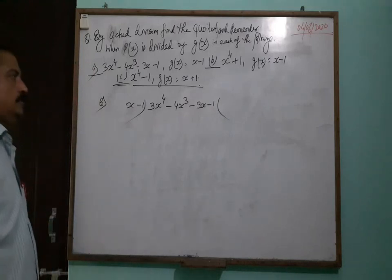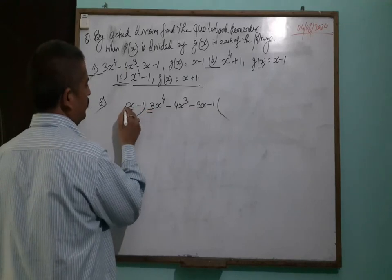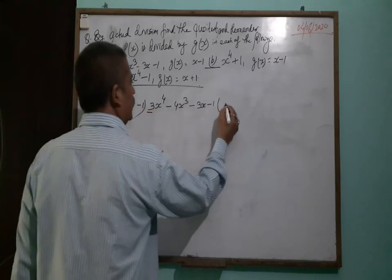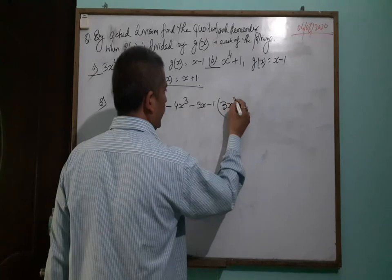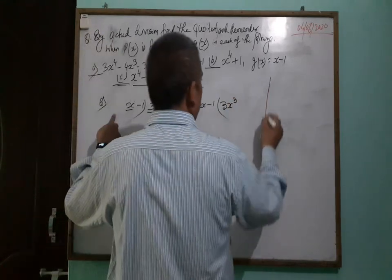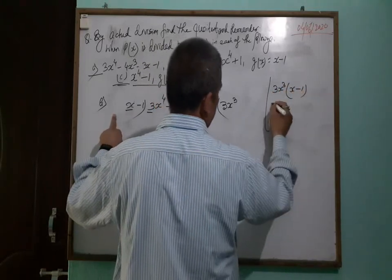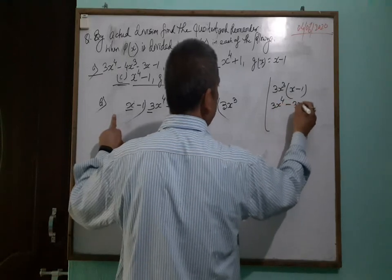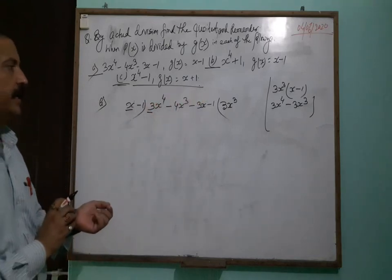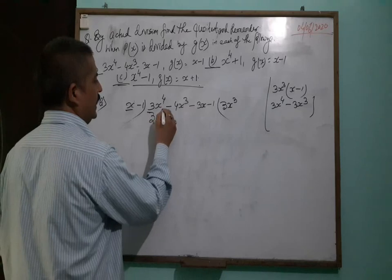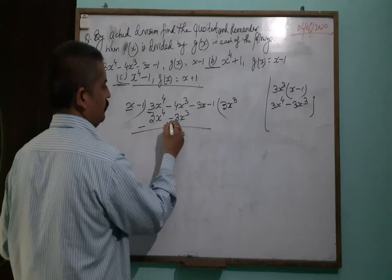So how to divide? There is a positive sign and positive sign. The coefficient of the divisor is 1 and of the dividend is 3. So we multiply. The exponent is 1 and 4, so we multiply by x cubed. We get 3x cubed, which multiplied by x minus 1 gives 3x to the power 4 minus 3x cubed. Minus plus cancel, giving minus x cubed.